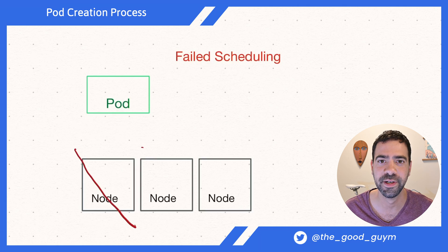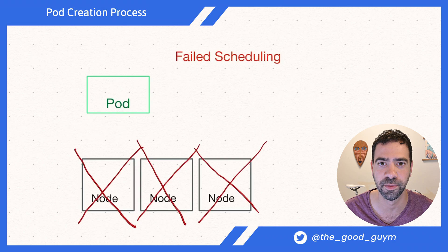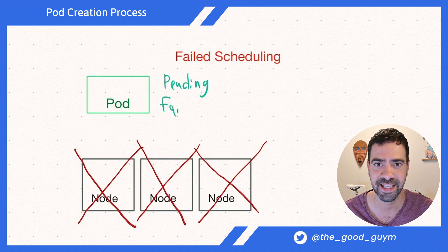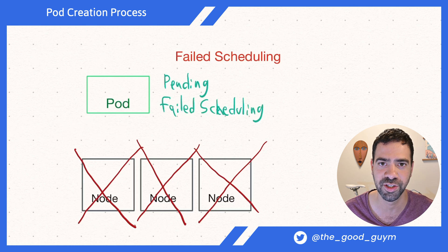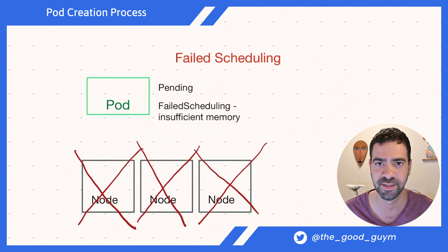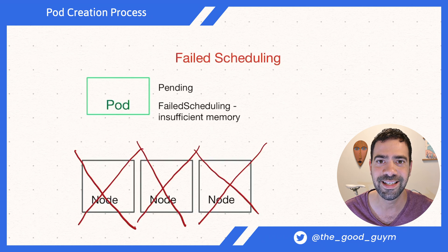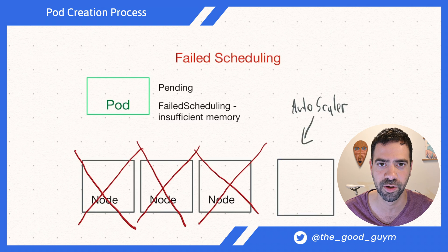But what happens when Kubernetes fails to find a node for your pod? The pod will be in a pending state, while a failed scheduling event will be issued to the pod. In the failed scheduling event, you will find all the relevant information to understand why it failed — for example, insufficient memory across the nodes within the cluster. This is when the autoscaler comes in. The autoscaler should spawn a new node with enough memory for your pod.